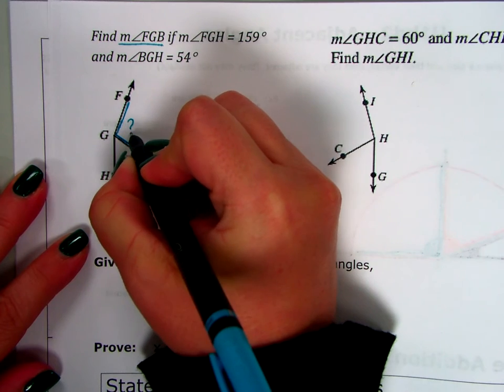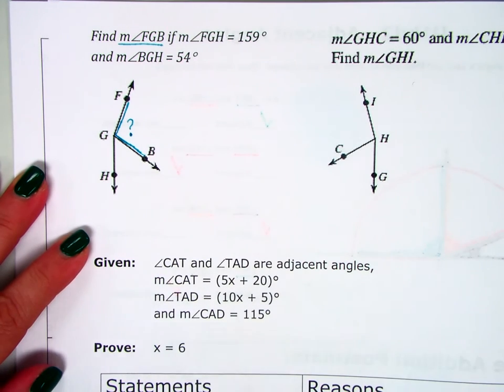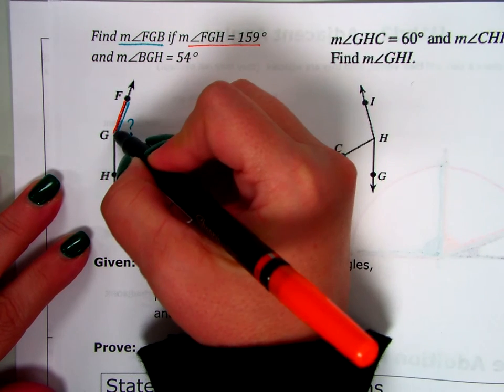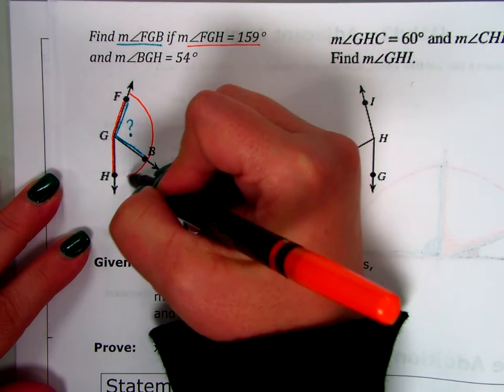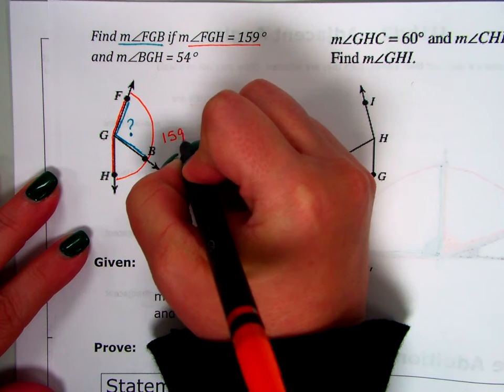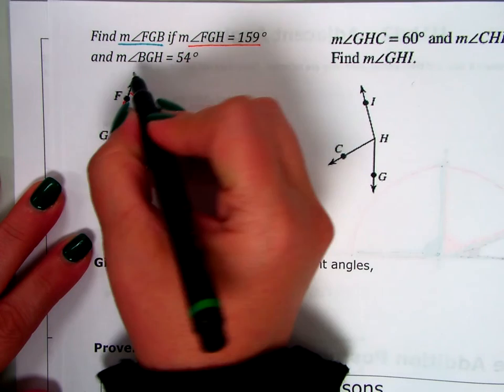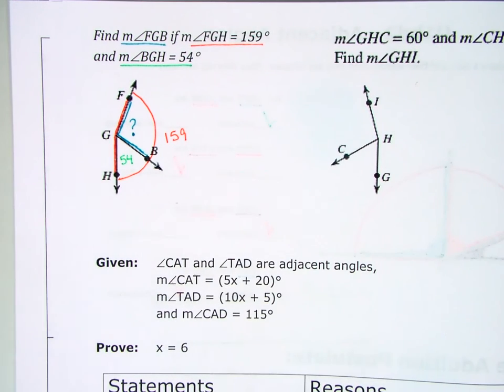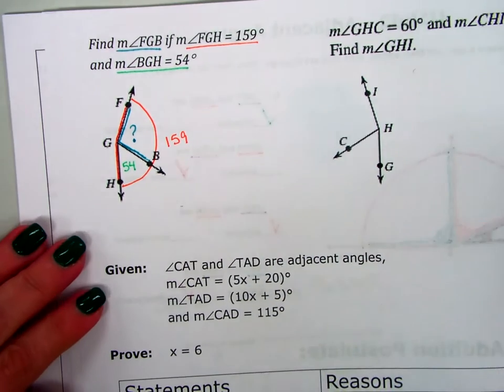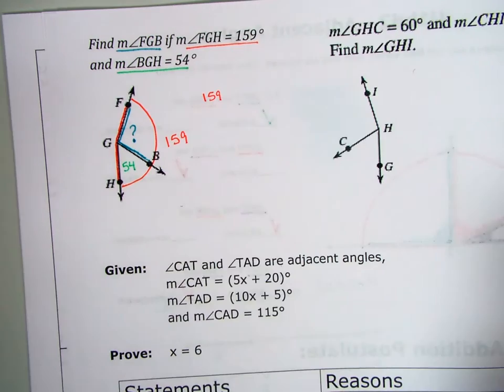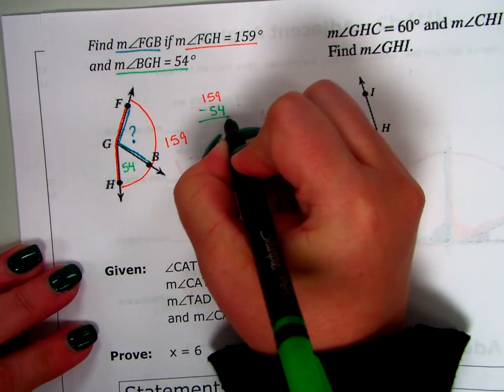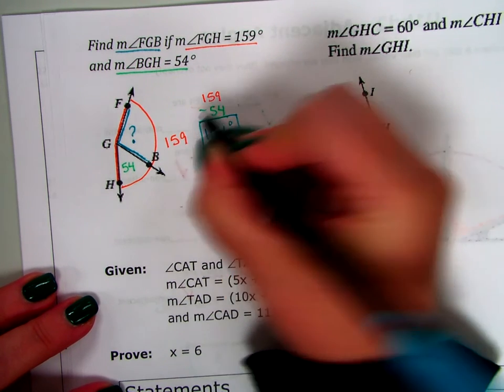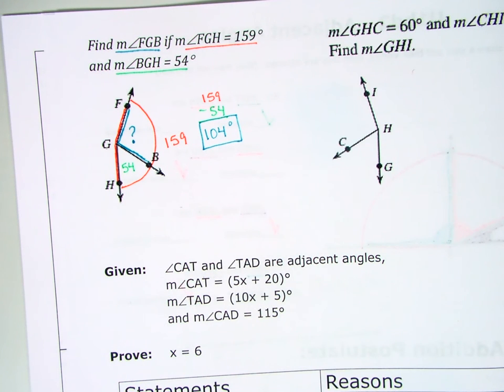The next one, find the measure of angle FGB. So, FGB. So, I'm going to be looking for this blue angle. I don't know what it is. This one right here that I put the question mark in it. The measure of angle FGH is 159. So, F to G to H. So, that's the whole angle is 159. And then, the measure of angle BHG is 54. How can I find the blue angle? 159 minus. So, I'm going to do 159. I'm going to take away the 54. And that gives me 105 degrees.